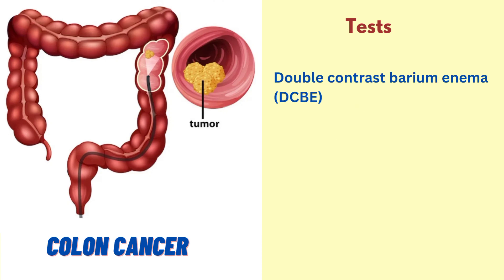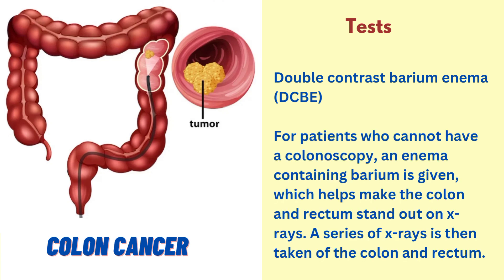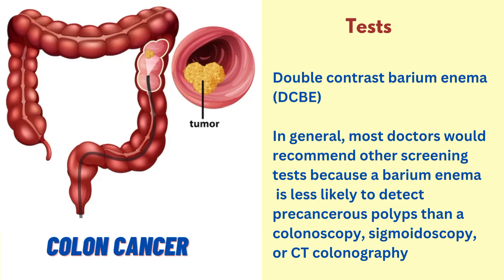The double contrast barium enema test, also called the DCBE test. For patients who cannot have a colonoscopy, an enema containing barium is given, which helps make the colon and rectum stand out on X-rays. A series of X-rays is then taken of the colon and rectum. In general, most doctors would recommend other screening tests because a barium enema is less likely to detect precancerous polyps than a colonoscopy, sigmoidoscopy, or CT colonography.